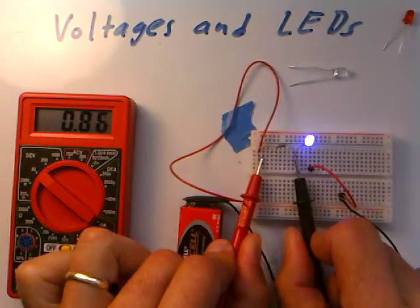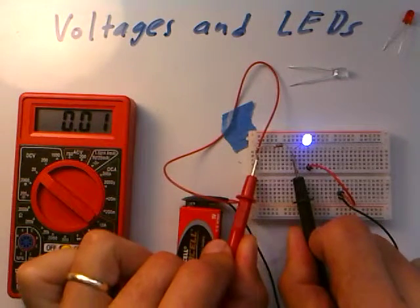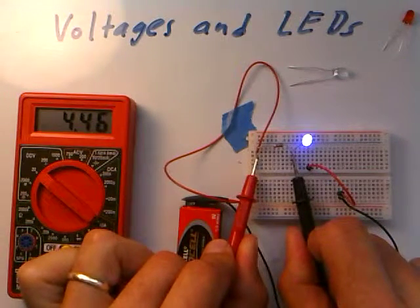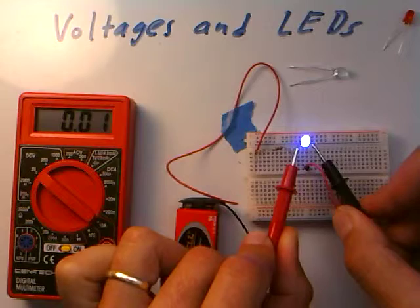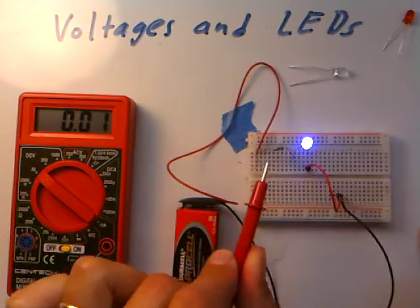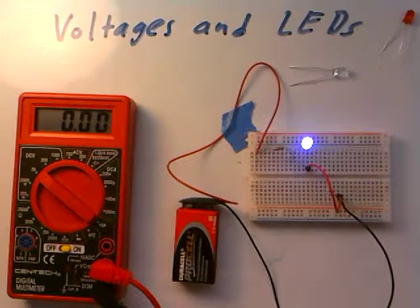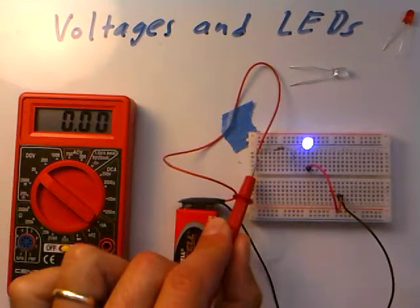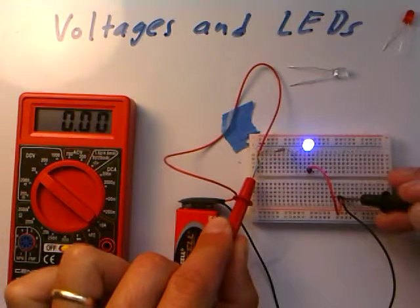Across the resistor now, I'm getting about 4.5 volts. And across the LED, I'm getting about 4 volts. So 4.5 and 4. The voltages have changed.